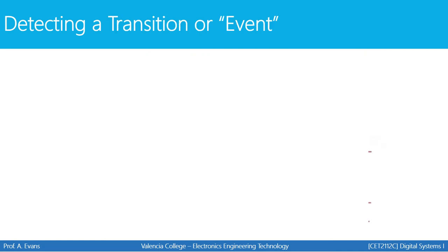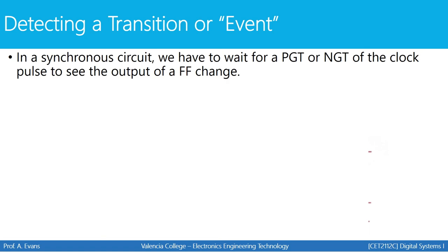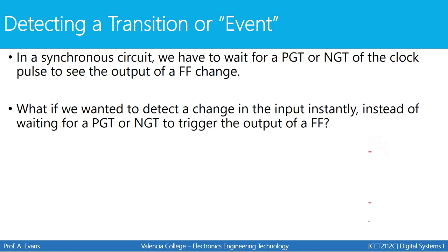In our next example using flip-flops, we're going to detect a transition or an event. In a synchronous circuit — one synchronized with a clock signal — we have to wait for a positive or negative transition of the clock to see the output of a flip-flop change. But what if we wanted to detect a change in the input instantly? A button or switch can change its value at any point in time, but a flip-flop will only change its output when the clock makes a transition. What if I want to know that an input changed immediately, without waiting for the clock?